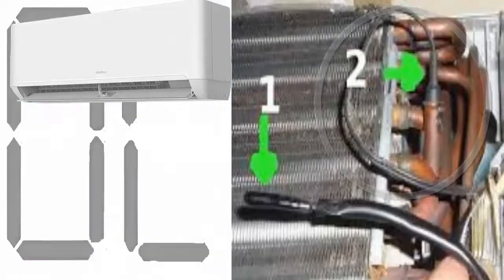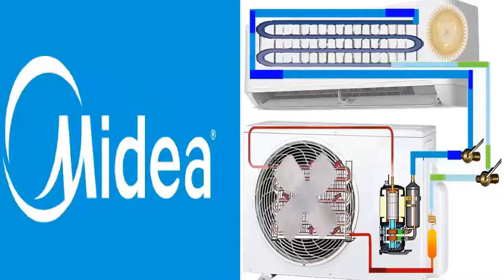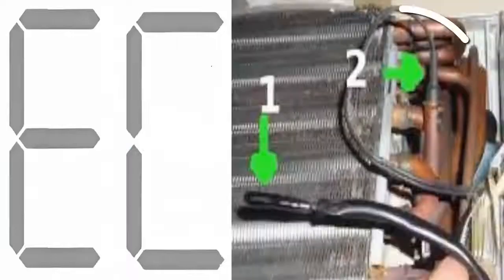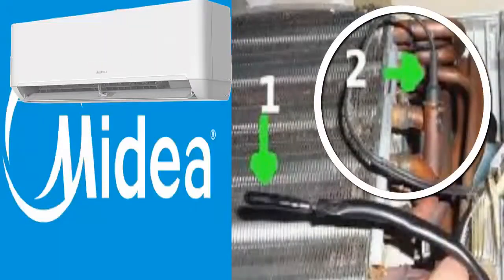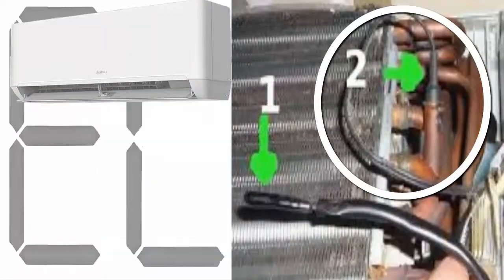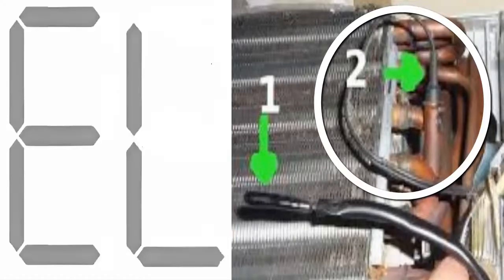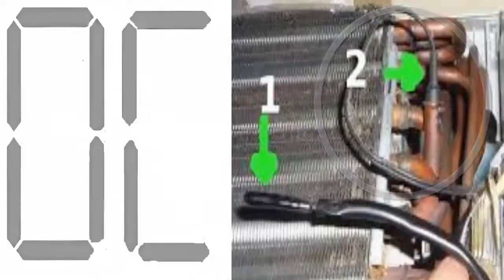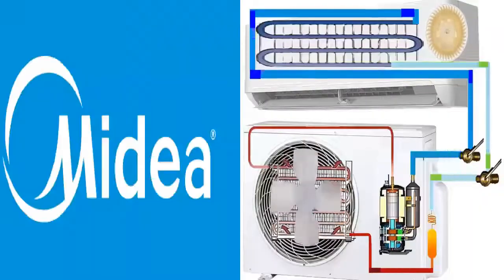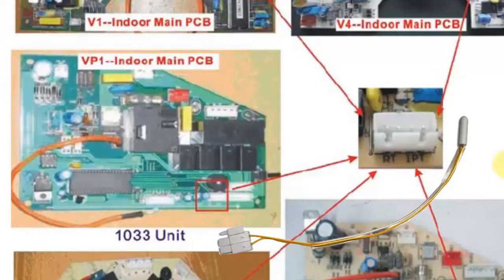Step 5: Check the correct position of the sensor and the condition of the wires from the electronic board to the sensor. Step 6: If the error persists, turn off the unit, disconnect the sensor, clean the connections, and reconnect it.